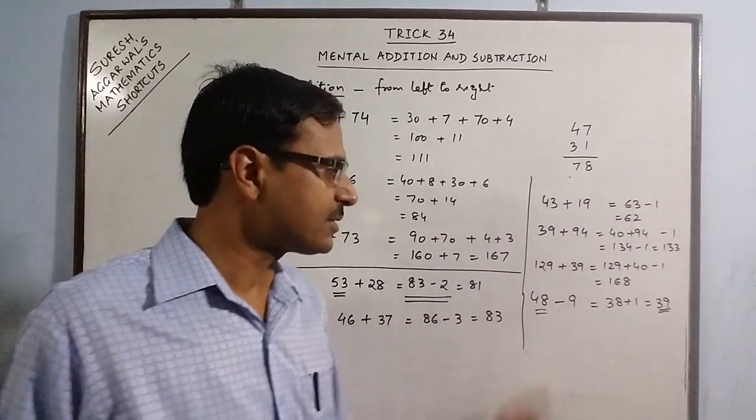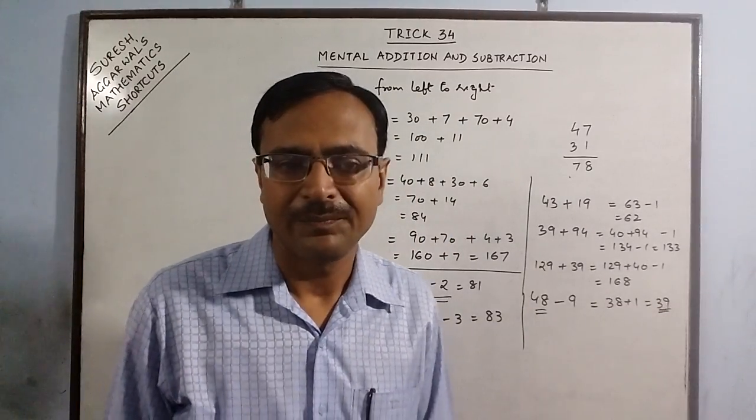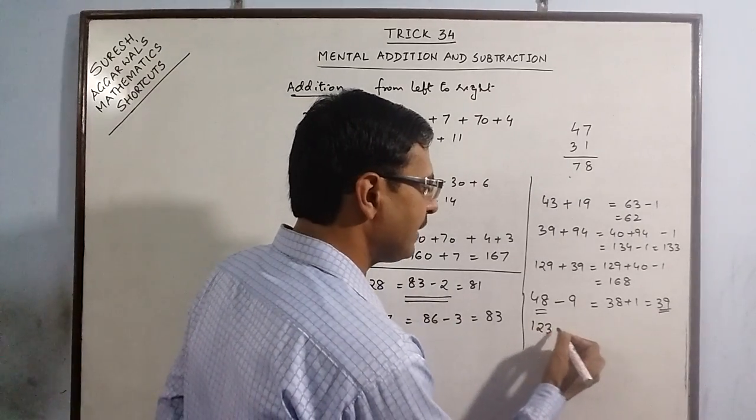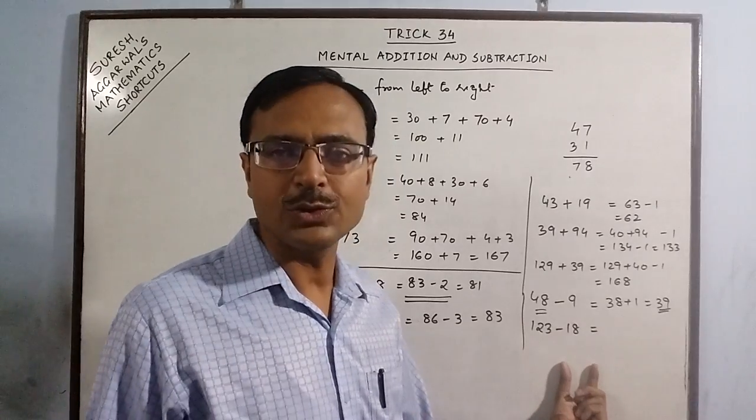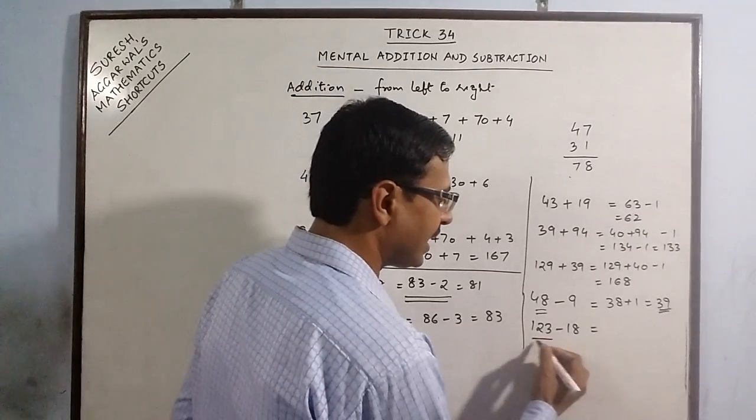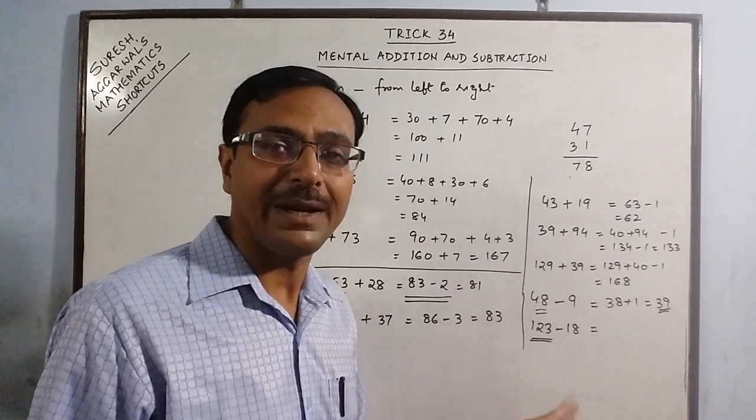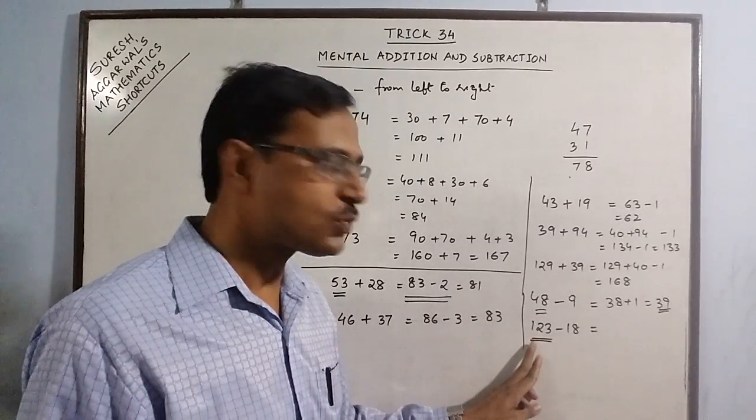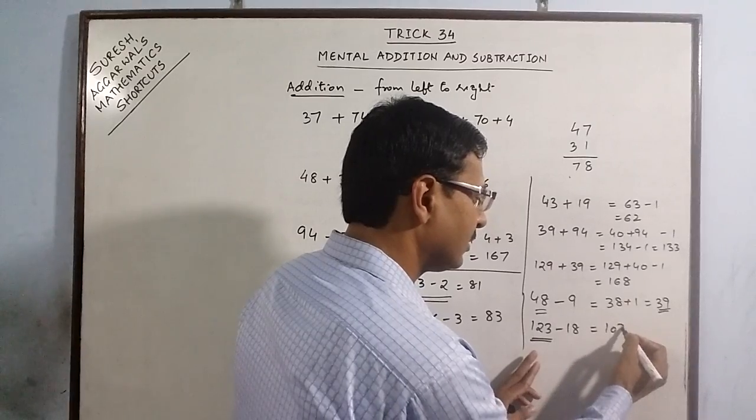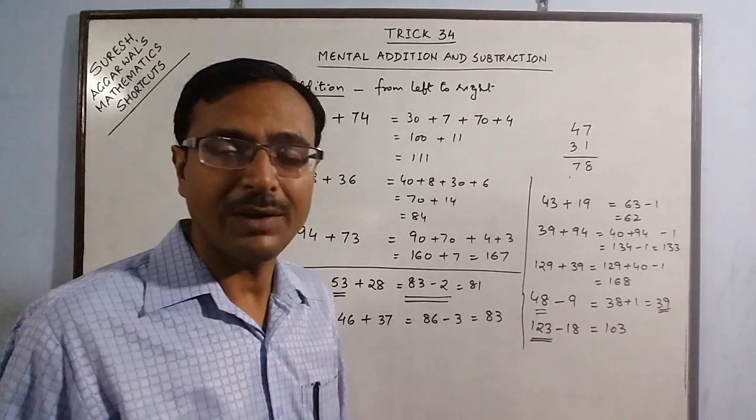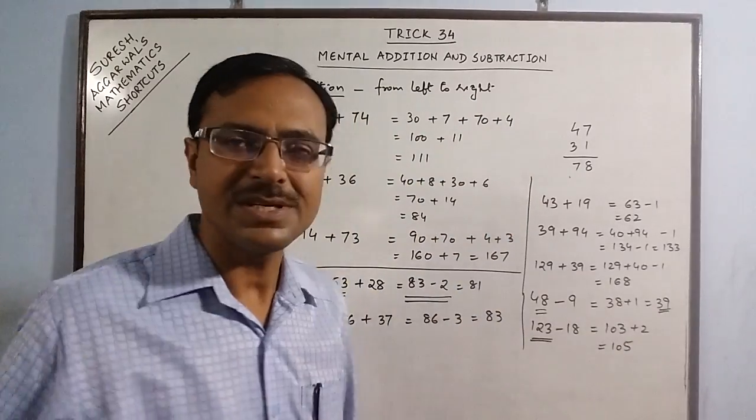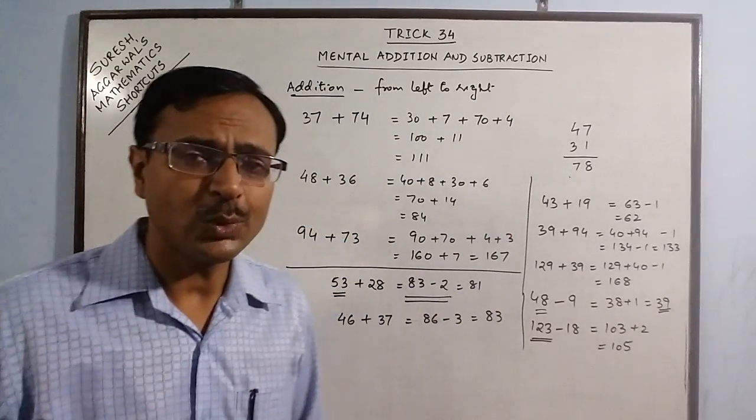So this is the result of subtracting 48 and 9. Now similarly, you can have, say, 123 minus 18. Now 18 is very close to 20 but 2 less than 20. So what I do is I will reduce this by 20, not by 18. So if you reduce 123 by 20, it will become 103. But you have reduced 20, so you have got to add 2 = 105. See, it becomes so easier, it becomes so convenient.